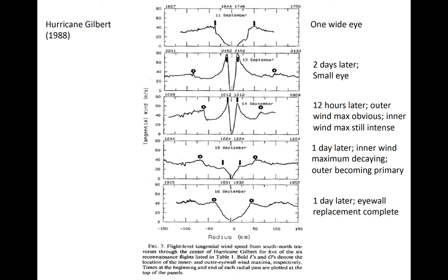Displayed are cross sections of wind speed obtained by aircraft through a very intense Atlantic hurricane, Gilbert, in 1988. The individual panels illustrate the evolution of tangential wind speeds as a function of radius over a four-day period. In the top panel, a large 50-kilometer-plus wide eye is apparent, surrounded by a wind maximum of about 40 to 45 meters per second, as denoted by the y-axis, with the radius from the center on the x-axis. The wind maxima corresponded in space with the eyewall.